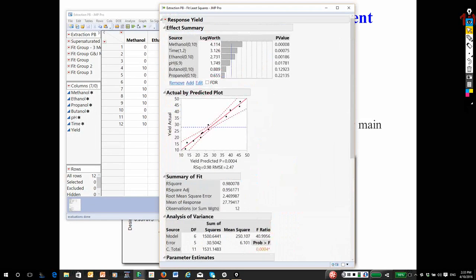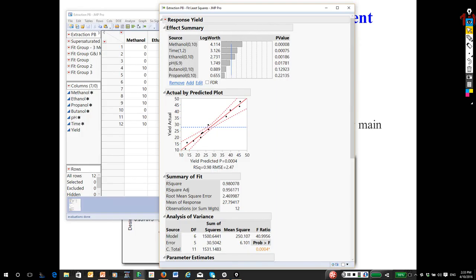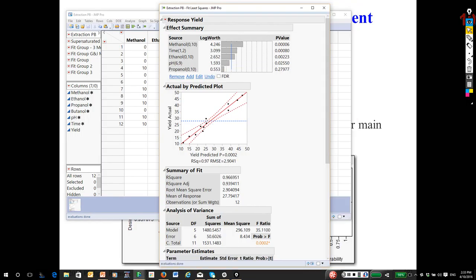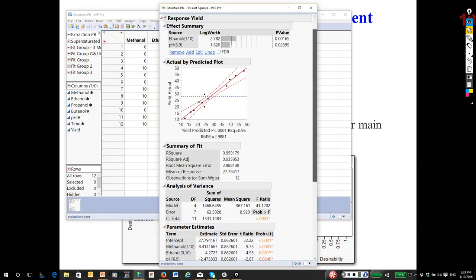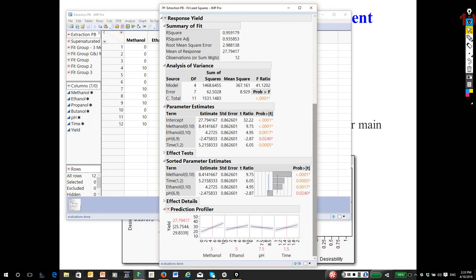I am hesitant to do it because of the aliasing, but the smallest effects by far are butanol and propanol. So if you wanted to, I'm going to show you later, this is not optimal, but I could remove them for illustration. But if they're involved in interactions, what I just did could be very suboptimal.